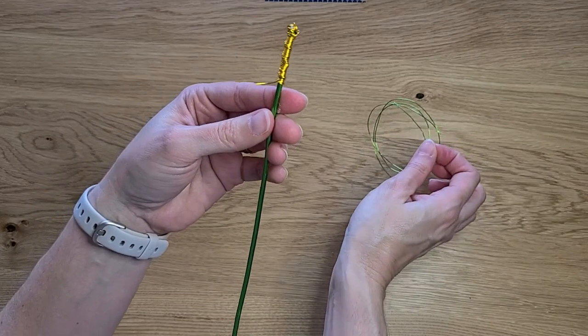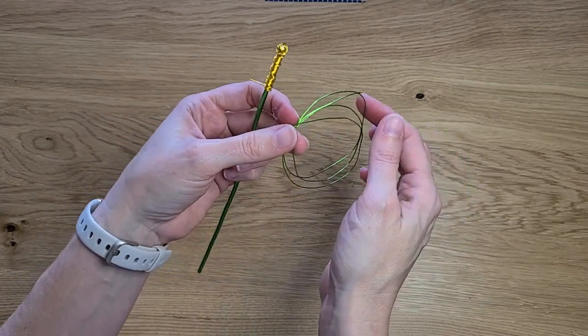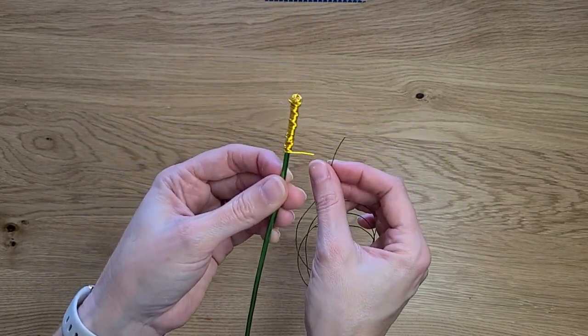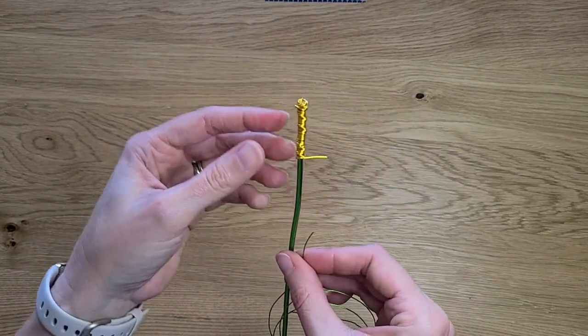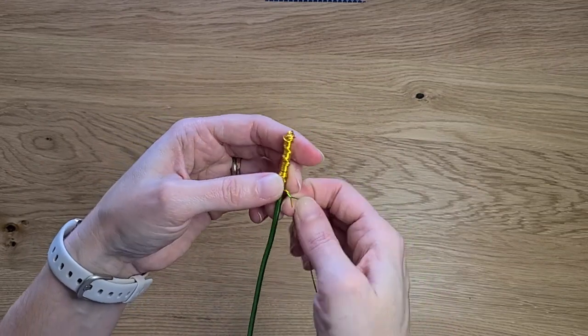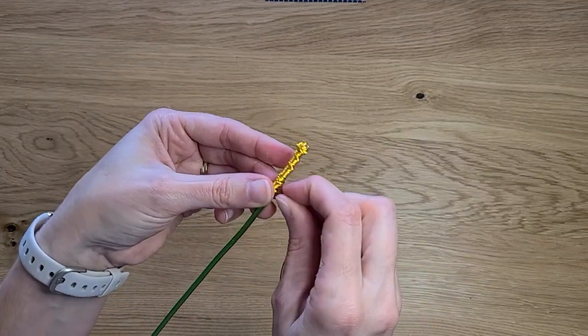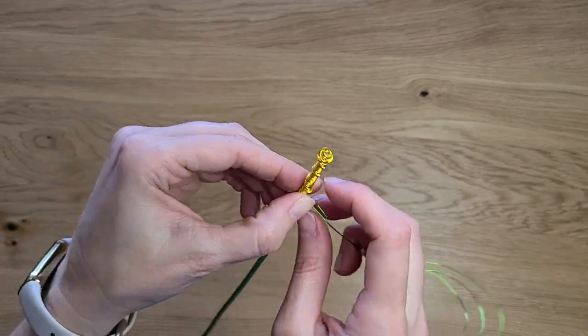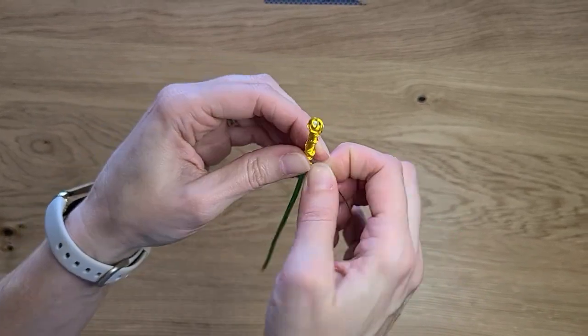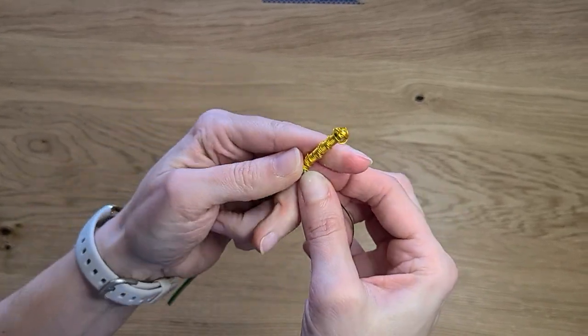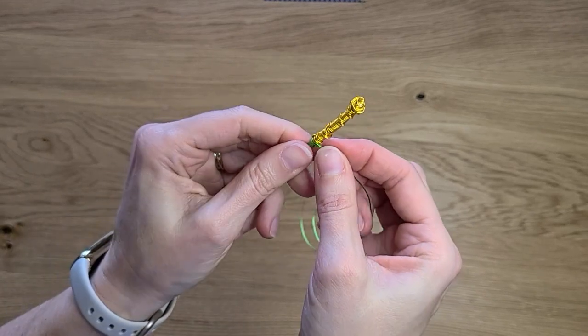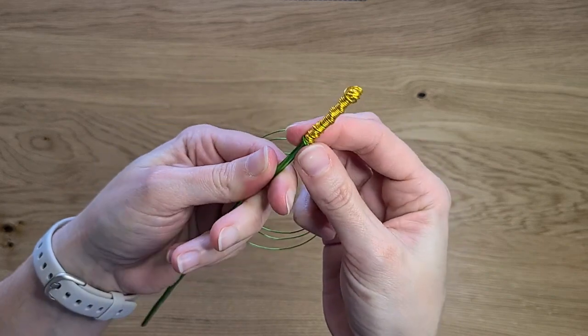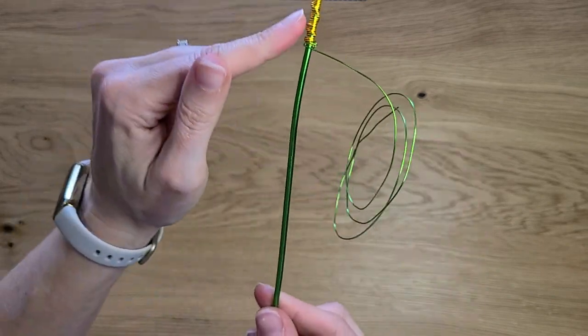Now we're going to take our green wire and this piece that you had sticking out from the beginning. I want you to just twist those two together. Get those twisted together and wrap the green wire just once or so around your stem piece.